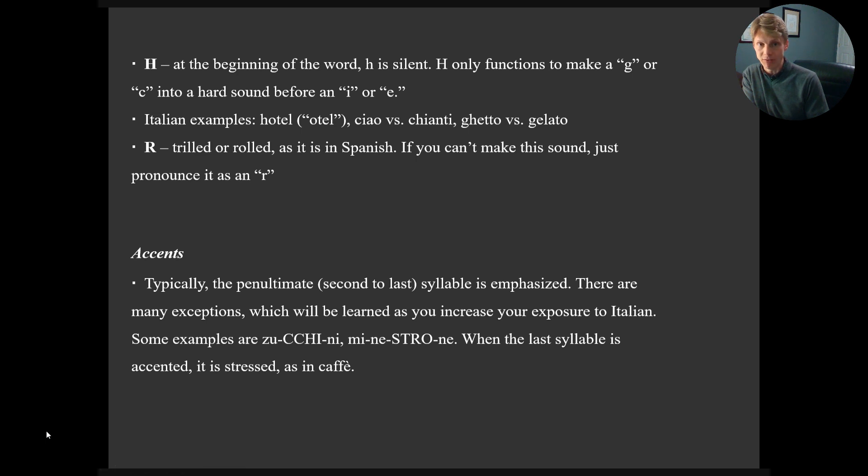H, if it's at the beginning of the word, is silent. So as I mentioned before, H is only to make a G or a C into a hard sound before I or E. So Italian examples would be hotel would be pronounced hotel. Ciao versus chianti. Okay. Again, soft. Cha versus chi. Okay. Ghetto versus gelato. And the R is trilled or rolled if you can do that in Spanish. If you can't make a sound, just pronounce it as R. You'll be fine. But if you can, it is trilled as in regatta or ragazza as girl.